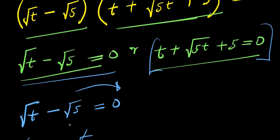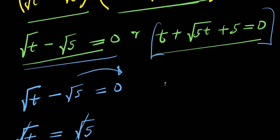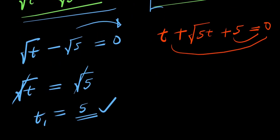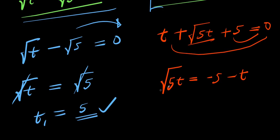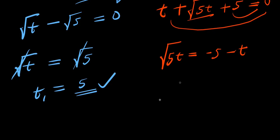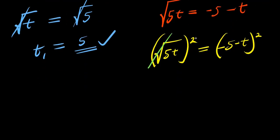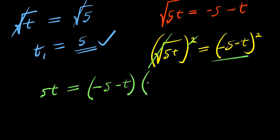Now we solve the second equation: t + √(5t) + 5 = 0. Isolating the square root term, we get √(5t) = −5 − t. Squaring both sides: 5t = (−5 − t)², which expands to 5t = 25 + 5t + 5t + t², that is 5t = 25 + 10t + t².